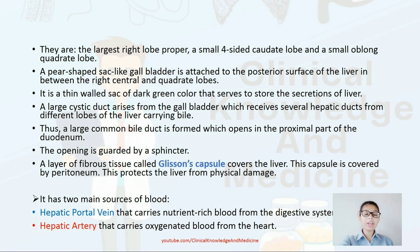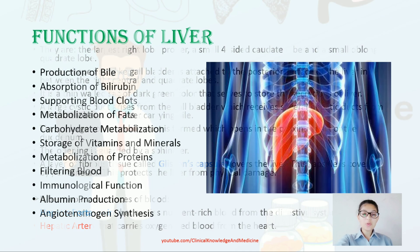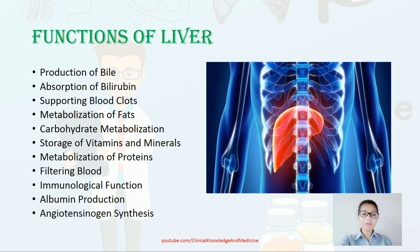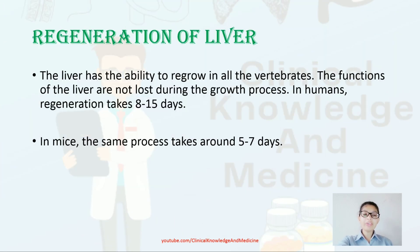The blood supply to the liver includes the hepatic portal vein, which carries nutrient-rich blood from the digestive system, and the hepatic artery, which carries oxygenated blood from the heart. Functions of the liver include production of bile, absorption of bilirubin, supporting blood clotting, metabolization of fats and carbohydrates, storage of vitamins and minerals, filtering blood, immunological functions, albumin production, and angiotensinogen synthesis. The liver can regenerate in 8 to 15 days in humans.